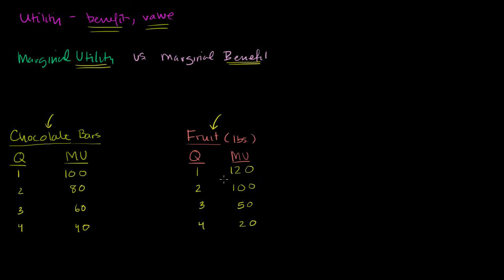What matters is not that the first chocolate bar is a hundred or a thousand or a million — what matters is how this compares to other things. For example, if this is a hundred, and I know I like a pound of fruit twenty percent more, then the marginal utility of my first pound of fruit would be a hundred and twenty. I could have set these to any numbers — ten and eight, or a thousand and eight hundred — what matters is that they have the same ratios between them that truly reflect my actual preferences.